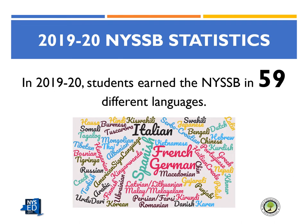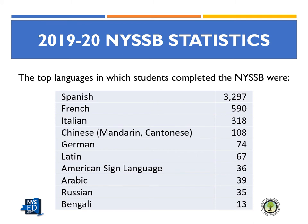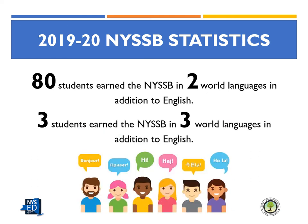In 2019–20, students earned the New York State Seal of Biliteracy in 59 different languages, including the very first candidate in an indigenous language, Tuscarora — an increase of 12 additional languages from the prior year. The most common languages were Spanish, French, Italian, Chinese, German, Latin, American Sign Language, Arabic, Russian, and Bengali. Students may earn the seal in English and any number of other world languages. To earn it in more than one world language in addition to English, students must earn three points in each language. In 2019–20, 80 students earned the seal in two world languages in addition to English, and three students earned it in three world languages in addition to English.